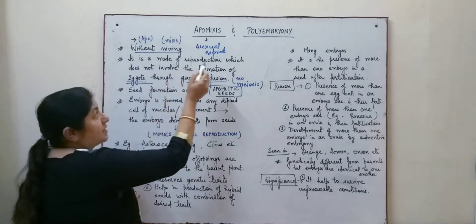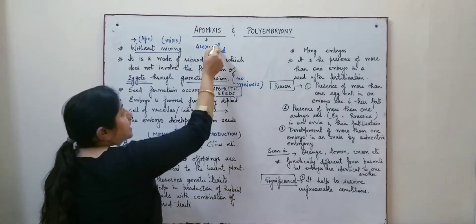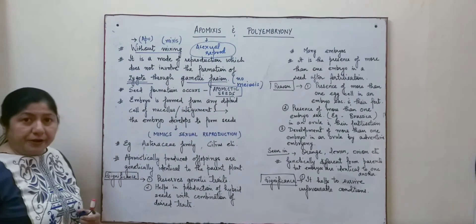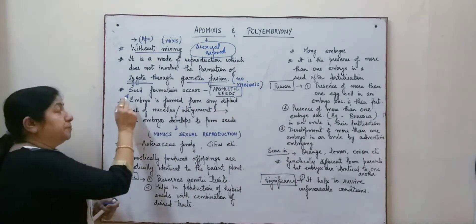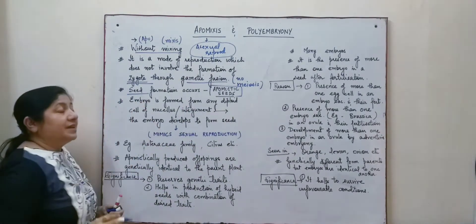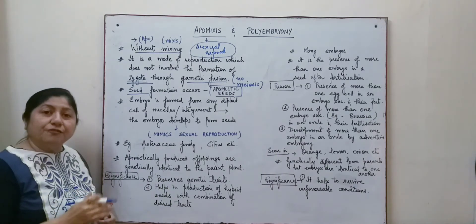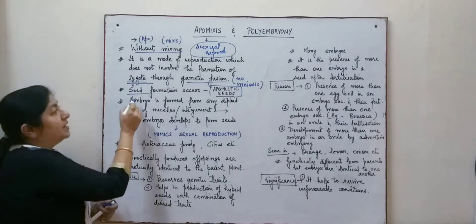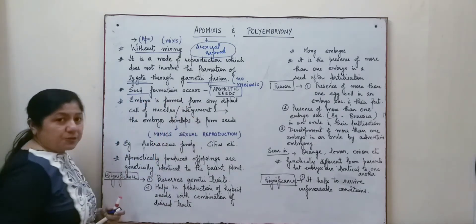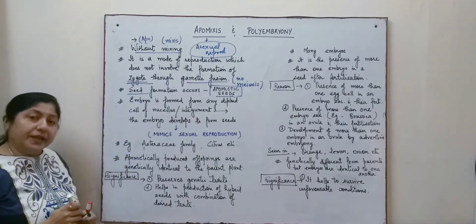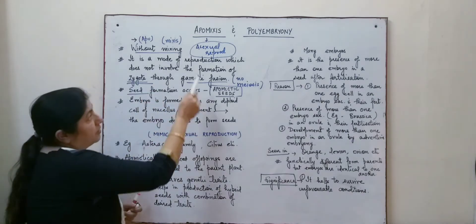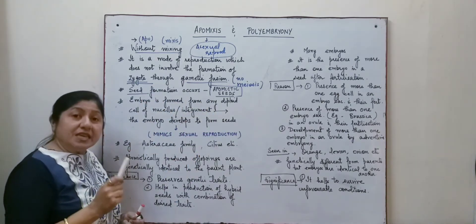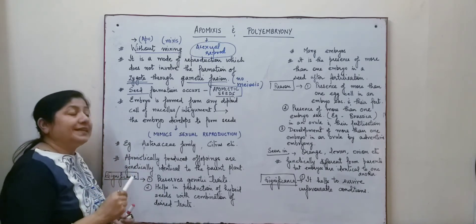Since there is no fusion of the gametes taking place, we call it an asexual mode of reproduction. But a unique feature is that in spite of not having actual syngamy, the seed formation still takes place. The seeds which are obtained by this process are known as apomyctic seeds, and these seeds are diploid in nature.